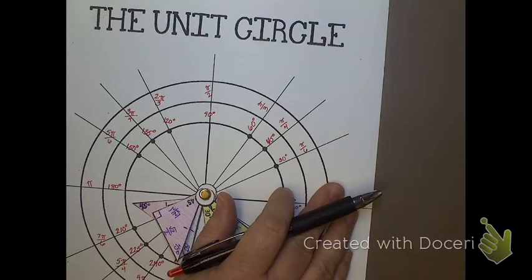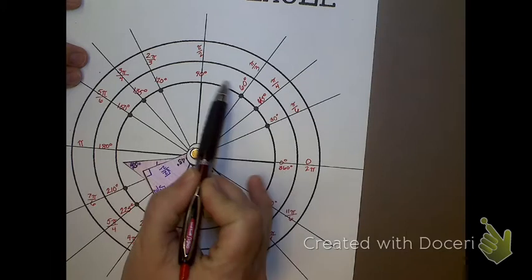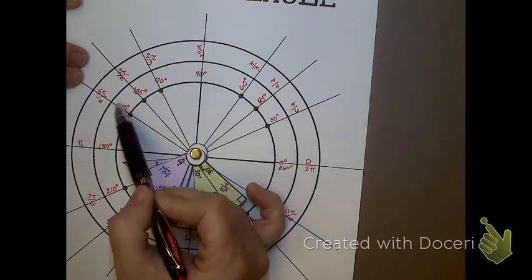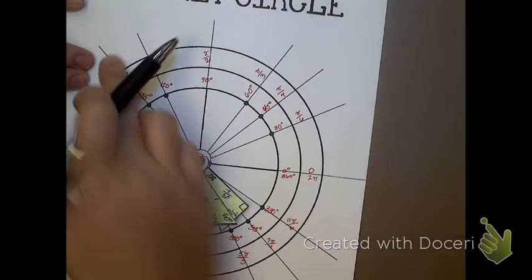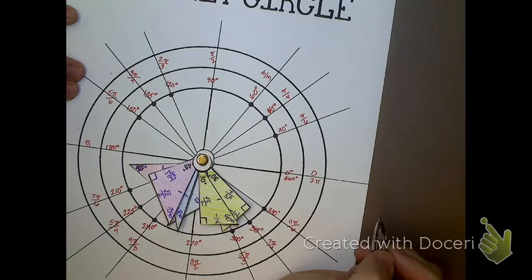We are down to our last step on our unit circle project. We have all of our degree measures here on the inside, and then we filled in our radian measures. Now we need to come up with these coordinates out here because each one of these points technically represents a coordinate.